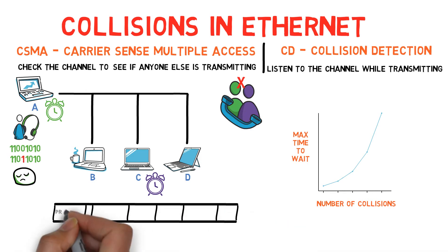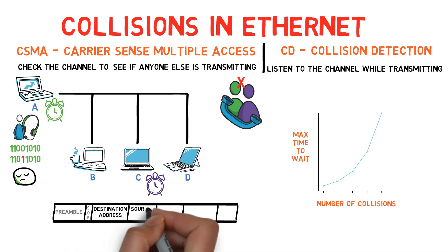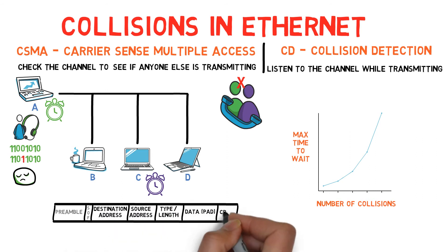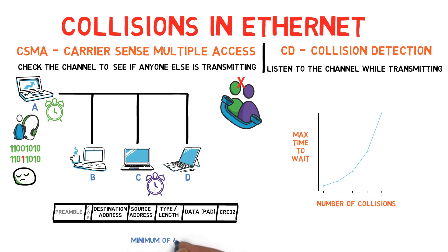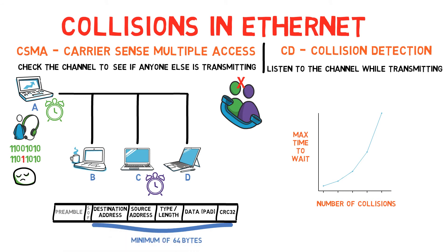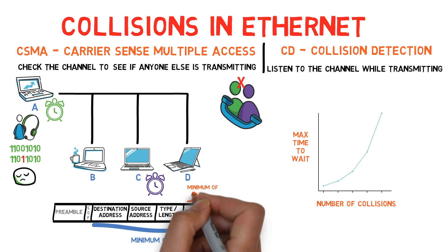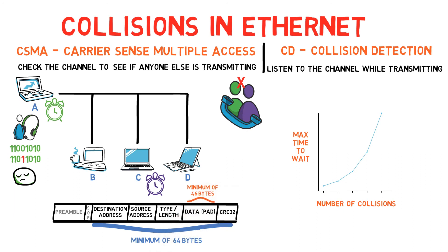Recall that when we discussed the Ethernet frame, we mentioned that there is a minimum length for that frame. Ethernet requires that valid frames must be at least 64 bytes long from destination address to checksum, including both. So the data has to be at least 46 bytes long. If the frame is too short, then it must be padded.